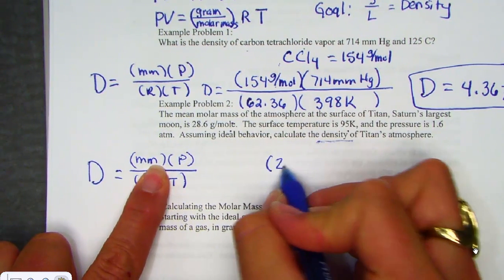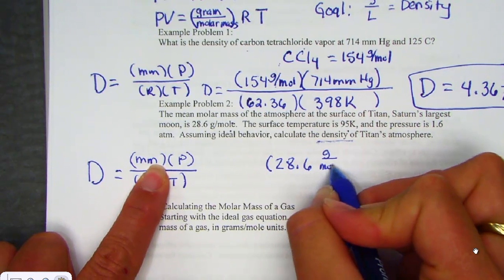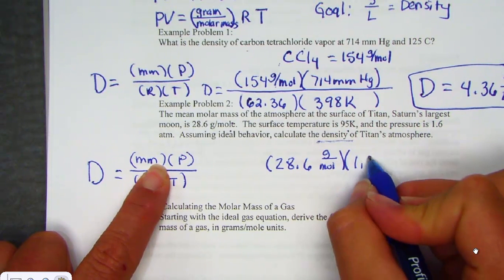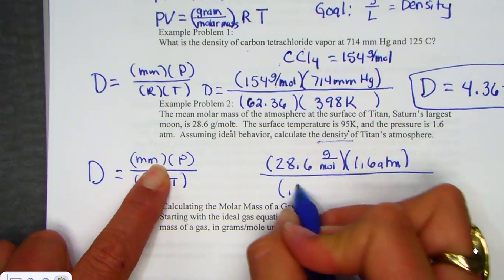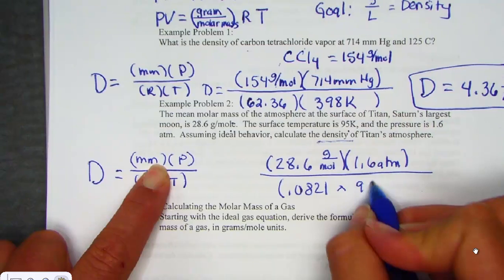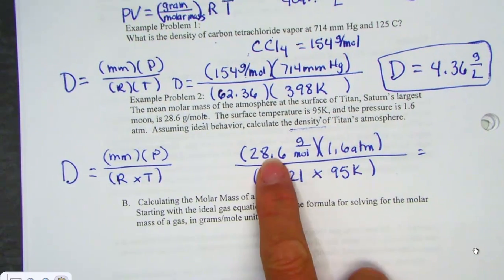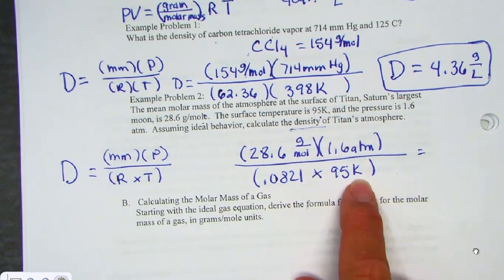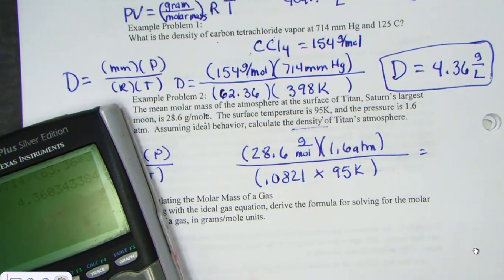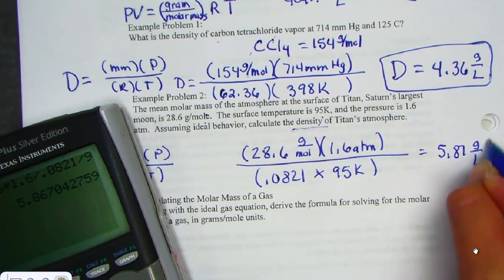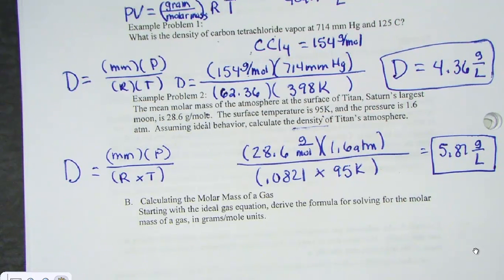So density requires knowing the molar mass, which this time was provided for us, which is 28.6 grams per mole. Pressure was given to us in an atmosphere of 1.6. So when we place in the R constant to match, 0.0821. And the Kelvin temperature already provided is 95 Kelvin unit. So no conversion necessary there. Every one of our variables was provided. We were given molar mass times pressure divided by the product of R and T. Let's hit together. Olivia, would you like to hit with me for the density of atmosphere around Titan? 5.87 is a match. Thank you. And that unit for density, gram per liter. Thank you.